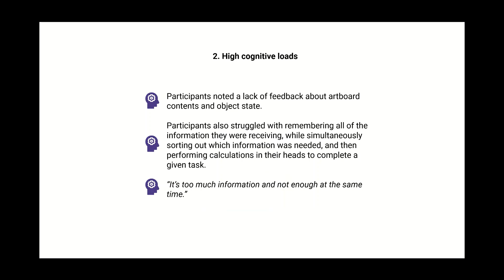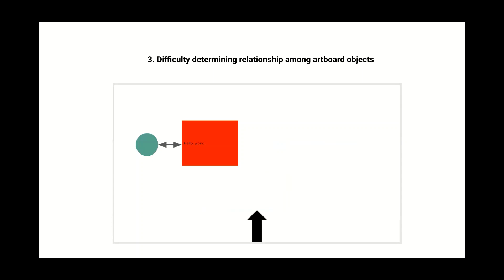Participants consistently encountered challenges related to understanding relative positions of objects on the artboard and the relationships among objects. In the usability study, for example, only four participants were able to at least partially determine the relationship between the rectangle and the oval.